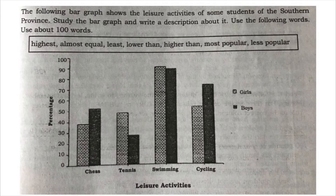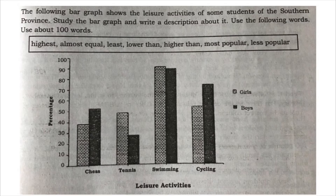Use about 100 words. The words given are: highest, almost equal, least, lower than, higher than, most popular, and less popular.